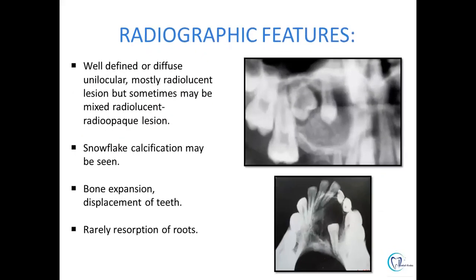Regarding radiographic presentation, mostly they are well-defined. Sometimes they can be diffuse unilocular radiolucencies. Sometimes they may appear mixed radiopaque-radiolucent with presence of snowflake calcifications. Other radiographic features include bone expansion and displacement of teeth. Root resorption can sometimes be seen, though it is usually rare.